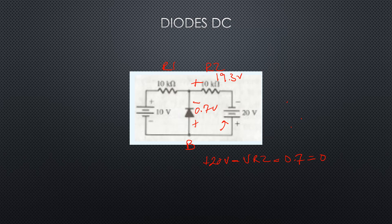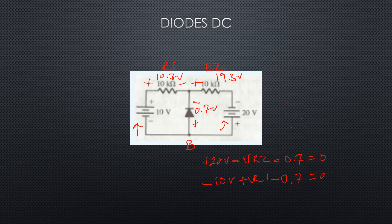Doing the same thing for the other side, going around the left loop: minus 10 plus V_R1 minus 0.7 equals zero. So V_R1 equals 10.7 volts. Bringing it across gives us V_R1 equal to 10.7 volts, and that Kirchhoffs to zero.